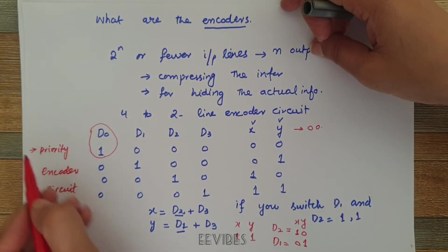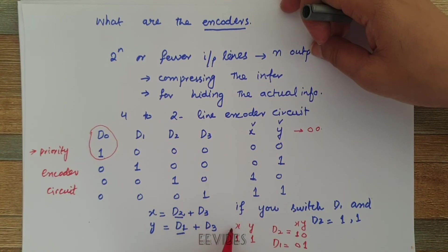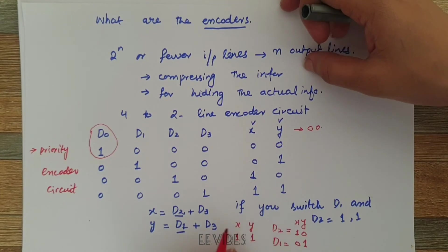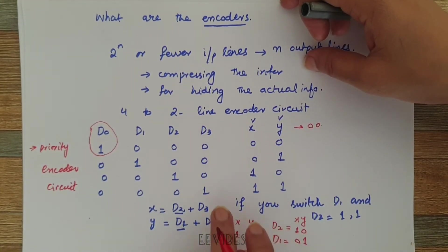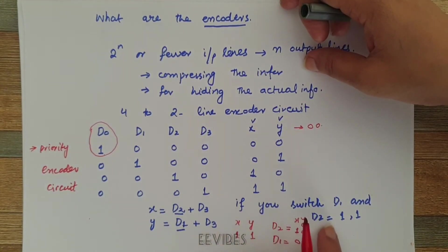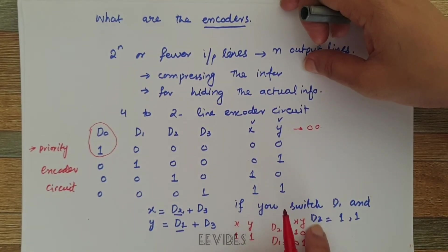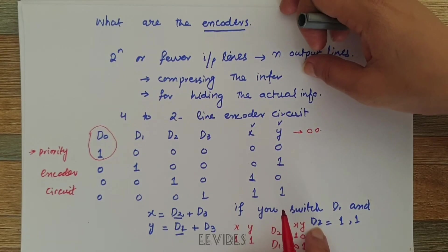The priority encoder circuit will solve our first problem, which means if both switches are turned on at a time, then the input with the higher subscripted value will be given the priority and its corresponding code will be generated.